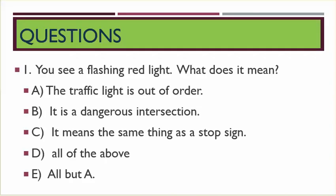Number one. You see a flashing red light. What does it mean? A: The traffic light is out of order. B: It is a dangerous intersection. C: It means the same thing as a stop sign. D: All of the above. E: All but A.